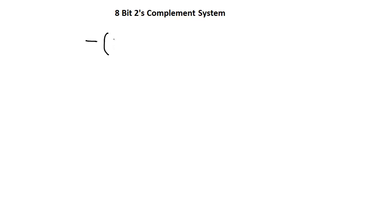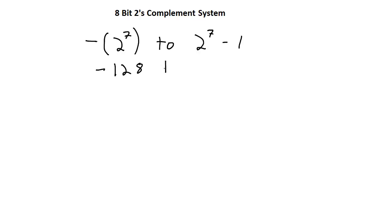Now let's put what we know into practice and look at an 8-bit 2's complement system. What is the range of values in an 8-bit 2's complement system? We said the range is from negative 2 to the (n−1) up to 2 to the (n−1) minus 1. With n = 8, that's negative 2 to the 7th (negative 128) up to 2 to the 7th minus 1 (positive 127). So the range is negative 128 to positive 127.